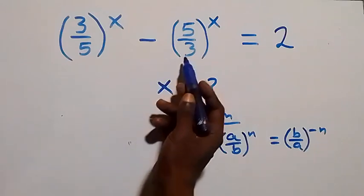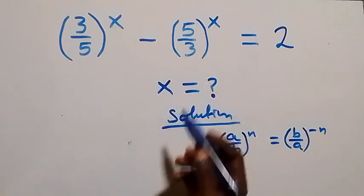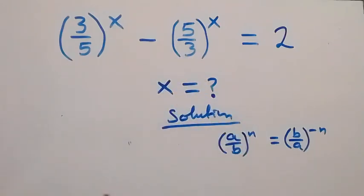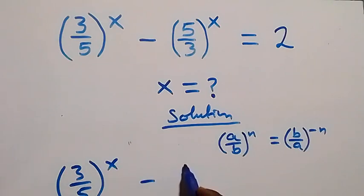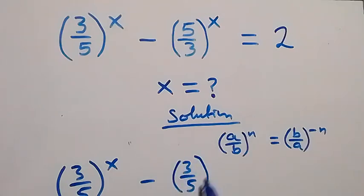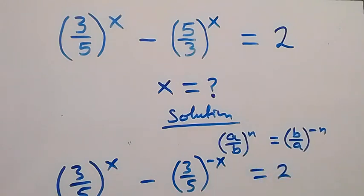Then let's rewrite this now as (3/5) raised to power minus x. What we have becomes (3/5) raised to power x, then minus (3/5) raised to power minus x, equals to 2.